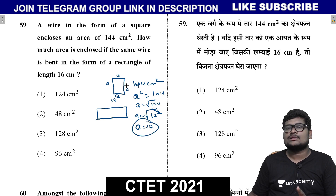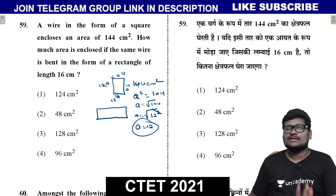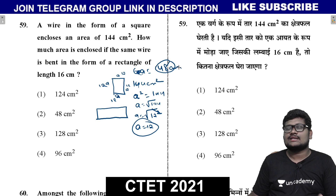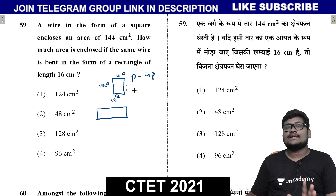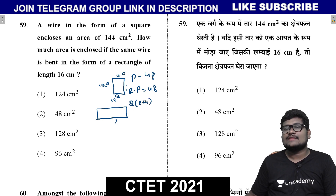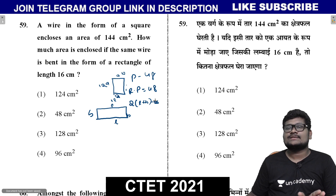The side of the square is 12 cm. The perimeter of the square is 4a = 4 × 12 = 48 cm. Since the same wire is used, the perimeter of the rectangle is also 48. The perimeter of the rectangle is 2 × (L + B). The length L = 16 cm.